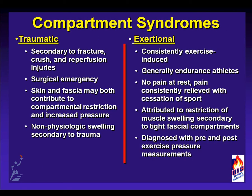Compartment syndromes can be broken down into traumatic versus exertional types. Traumatic are usually secondary to a fracture, crush injury, or possibly reperfusion injury secondary to leg or digit replantations. Traumatic and acute compartment syndromes are a surgical emergency. The fascia and skin must be released to allow reperfusion of the muscles, nerves, and tissues of the lower extremity. With acute compartment syndromes, the skin, fascia, and even splinting material all can be restrictive and must be released.